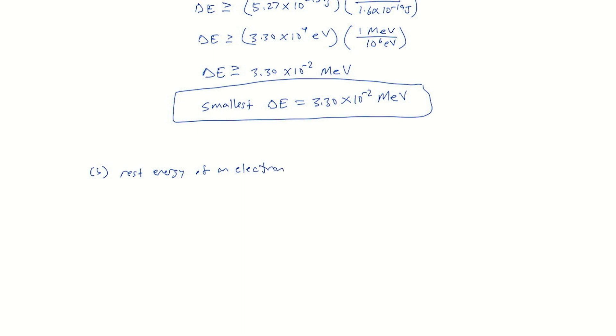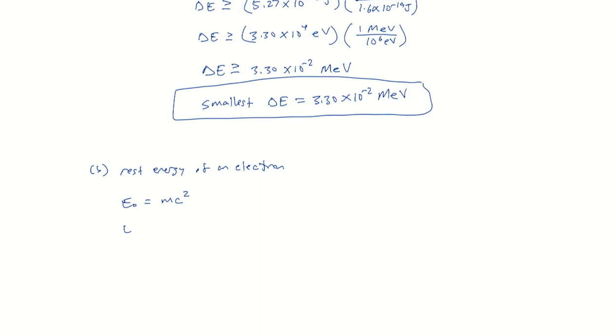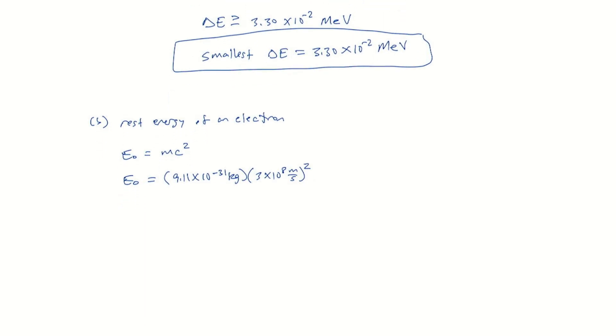The rest energy of an electron we find with E naught is equal to mc squared. The mass of an electron is 9.11 times 10 to the minus 31 kilograms. C is the speed of light, so we're going to multiply that by 3 times 10 to the 8 meters per second and square that. We get E naught is 8.199 times 10 to the minus 14 joules.